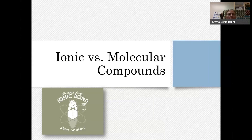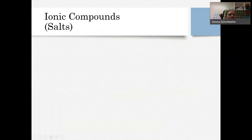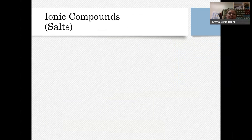Let's talk about the differences between ionic and molecular compounds. We'll start with ionic compounds. Ionic compounds we can also call salts — those are interchangeable. A lot of times people think salt is sodium chloride and that's it, but you can call any ionic compound a salt.